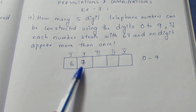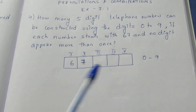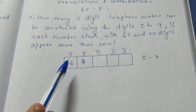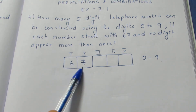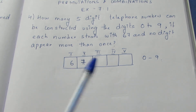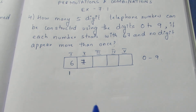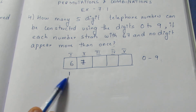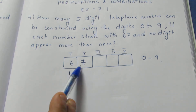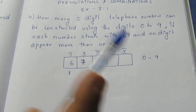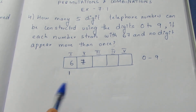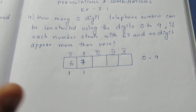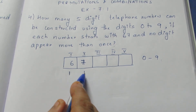We have constructed 67 because of the condition — always write the condition first. The condition is the number should start with 67. So we can fill the first box with only one way because we can write only 6 there. The same way for 7: we can write only 7 in the second box, not any other number. So this can also be filled in only one way.